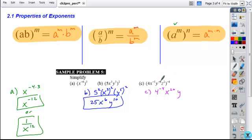My base of y to the negative 6 times negative 4 gives me a positive 24. And finally, my base of z squared or 2 times a negative 4 gives me negative 8.